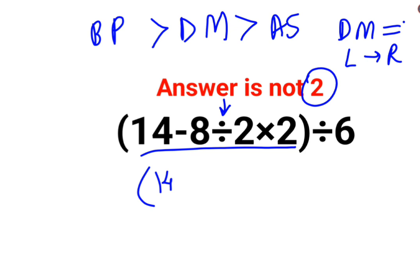So we have minus 8 divided by 2, which is minus 4, multiplied by 2, divided by 6. So we have 14 minus 4 multiplied by 2, is minus 8.